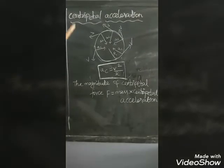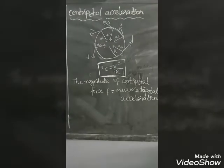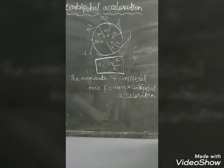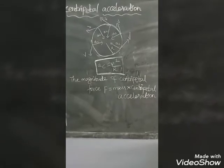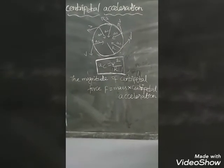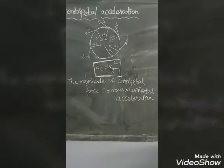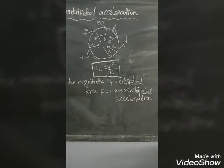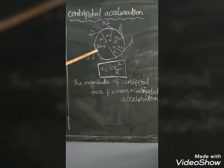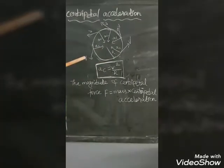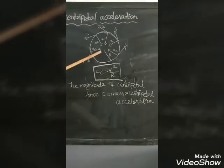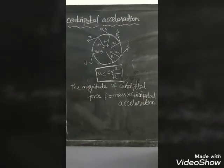Next topic: centripetal acceleration. A body is said to be accelerated if the velocity changes either in magnitude or in direction. The motion of a stone in a circular path with constant speed but continuous change of direction is accelerated motion — that is uniform circular motion. There must be an acceleration acting towards the center, and this is centripetal acceleration. The formula for centripetal acceleration is: a = v²/r, where r is the radius and v is the velocity.